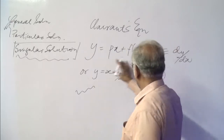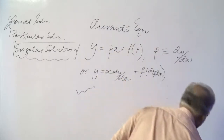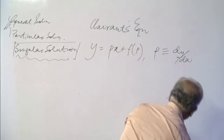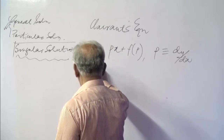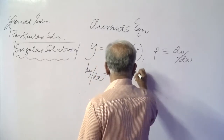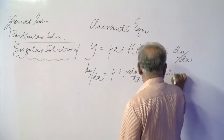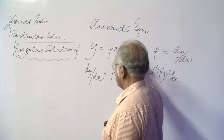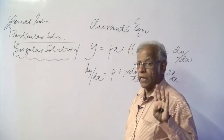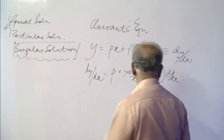We will see how we can solve this and get the singular solution from this particular equation. Starting with this equation, we take one differentiation. We differentiate and write dy/dx equals p times 1 plus x·dp/dx plus f'(p), applying the chain rule, times dp/dx. When we differentiate f(p) with respect to x, we get f'(p)·dp/dx.